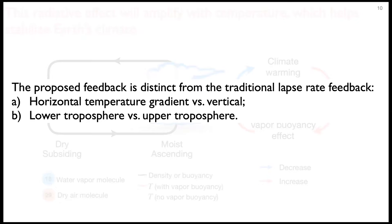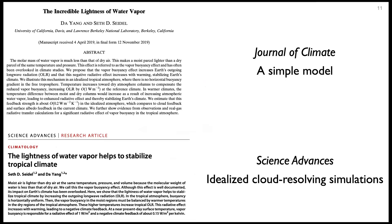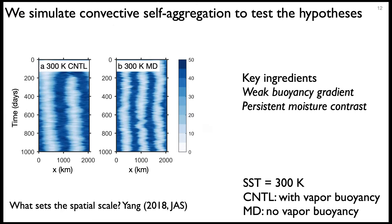Before showing cloud-resolving simulations to test the theory, I want to emphasize that this feedback loop is distinct from the traditional lapse-rate feedback, because this feedback is about horizontal temperature gradients versus vertical gradients in the lapse-rate feedback. Also, the temperature change or amplification is really in the lower troposphere. This work is based on two recent papers — one in Journal of Climate featuring a simple model, the other in Geophysical Research Letters featuring cloud-resolving simulations, which we'll focus on today.